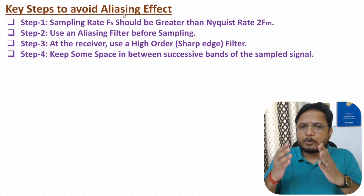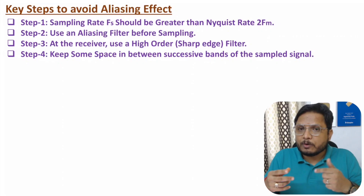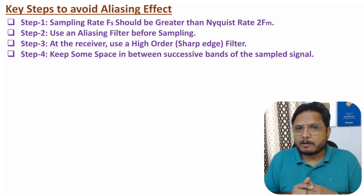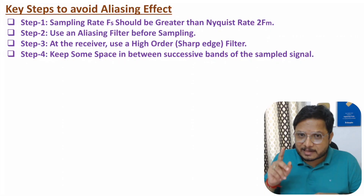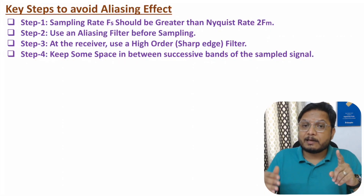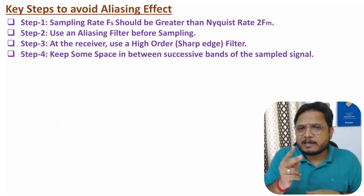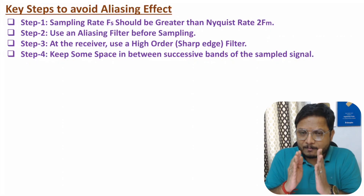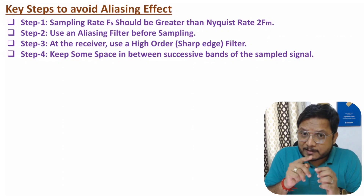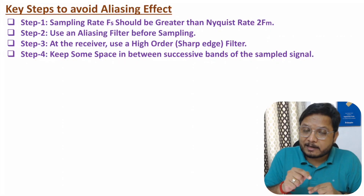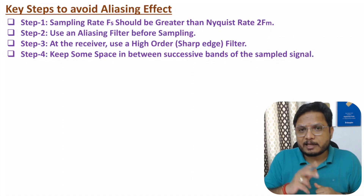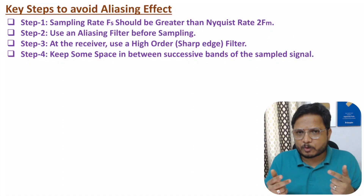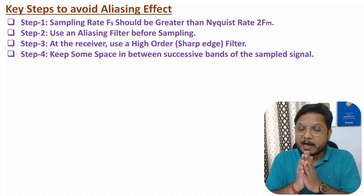Aliasing happens due to overlapping of bands caused by a sampling rate lower than the Nyquist rate. Sampling is the process of converting a continuous time signal into a discrete time signal by multiplying the original signal with an impulse train. The key conditions are: sampling duration Ts ≤ 1/(2Fm) and sampling rate Fs ≥ 2Fm, where Fm is the maximum frequency of the original signal. If you have any confusion, place it in the comment section — thank you for watching.